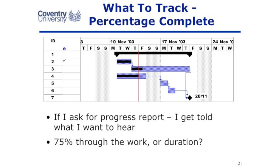What I need to say is: how much work have you booked against this task, and how much work to now complete it? So when somebody estimates 20 hours of work on a task spread over a three-week duration, as they're doing the task I ask how many hours they've booked — they might say 10 hours. Then I ask how many hours to complete it; they might say 15 hours. So the total work is now 25 hours, whereas the original baseline estimate was 20 hours.